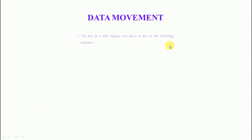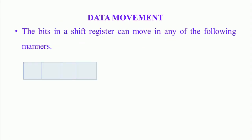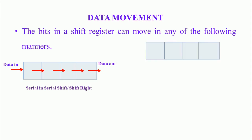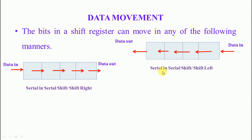The following is a symbolic representation of different types of data movement in shift registers. In the first example, data is on the left-hand side. Upon applying the clock pulse, the data moves and the output appears on the right-hand side. This type is called a serial in serial out shift register shifting in the right direction. In the next example, data is on the right-hand side. Upon applying the clock pulse, the data moves and the output appears on the left-hand side. This is called a serial in serial out shift register shifting in the left direction.